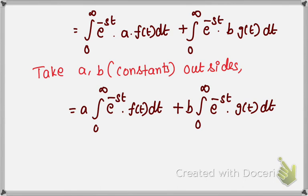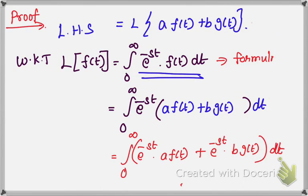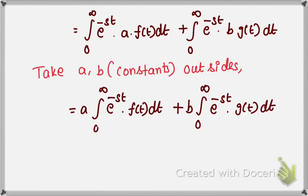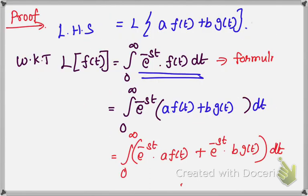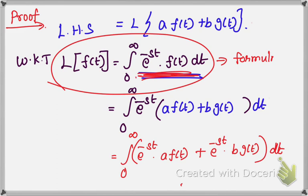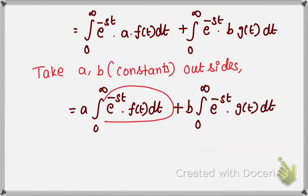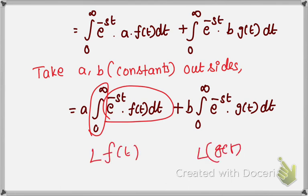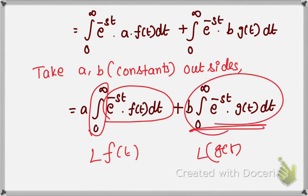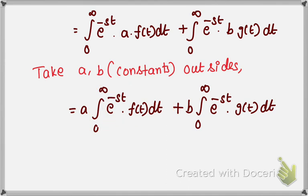Now, this is of the form of the Laplace transform formula. Check the formula again. The integral from 0 to infinity of e to the power minus s·t times f(t) dt can be written as L of f(t). Similarly, the integral from 0 to infinity of e to the power minus s·t times g(t) dt can be written as L of g(t). This is the formula for Laplace transform.